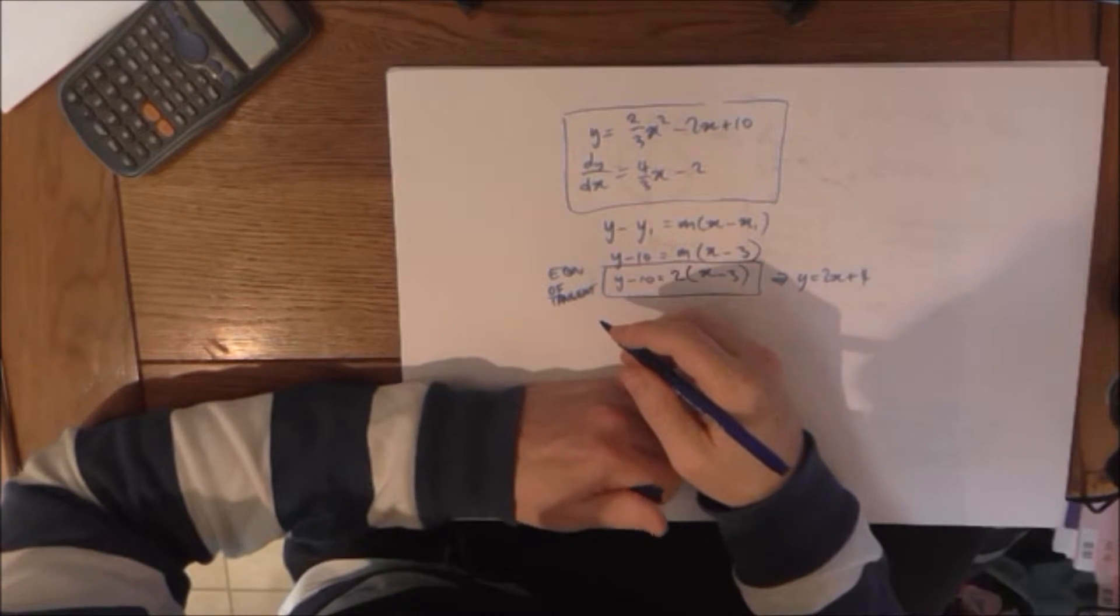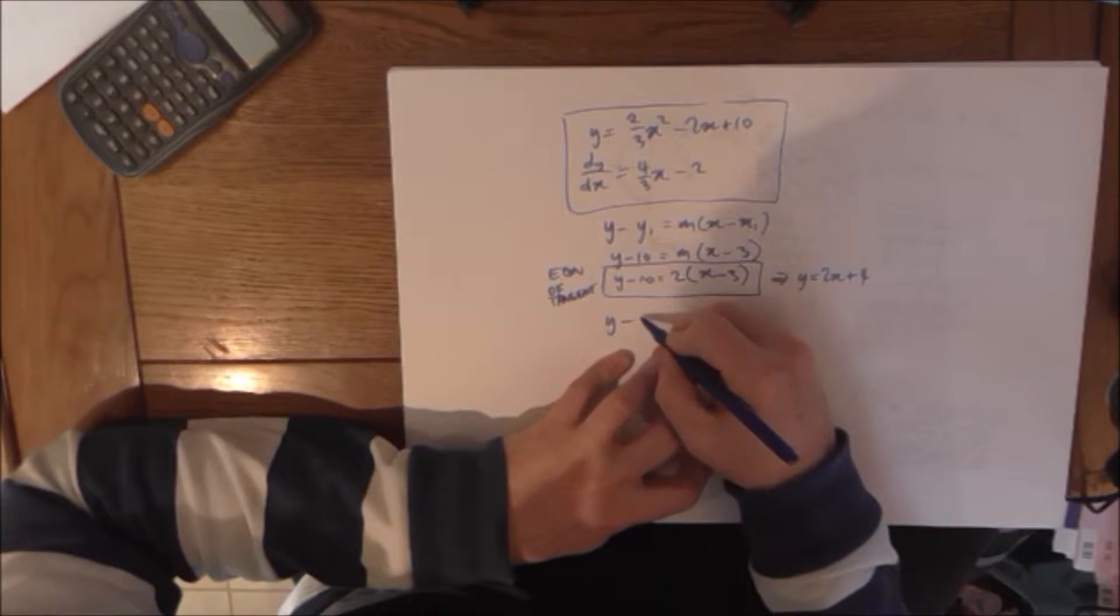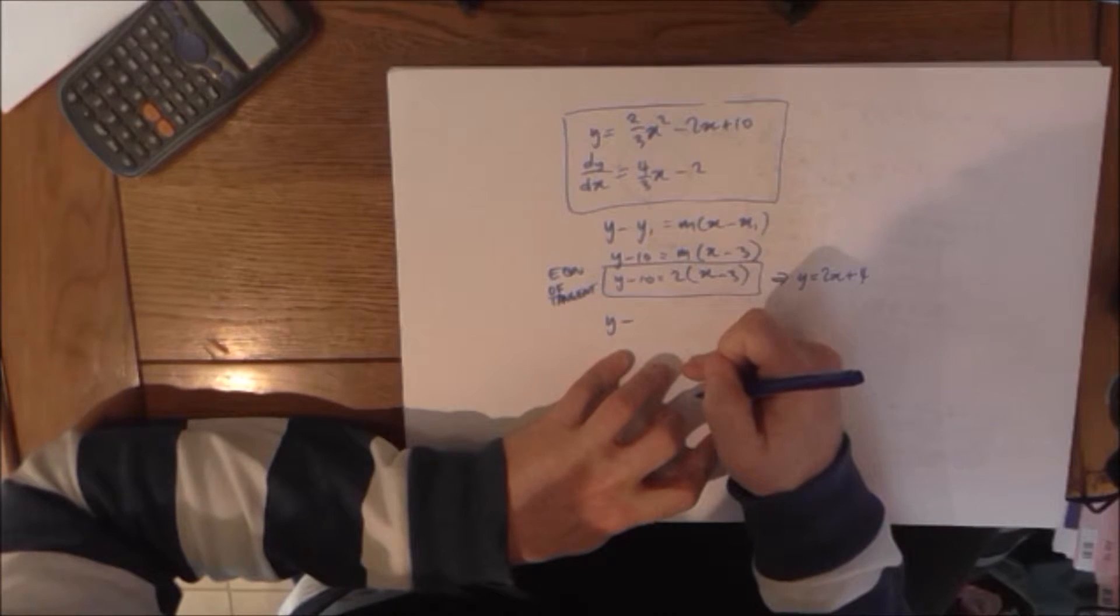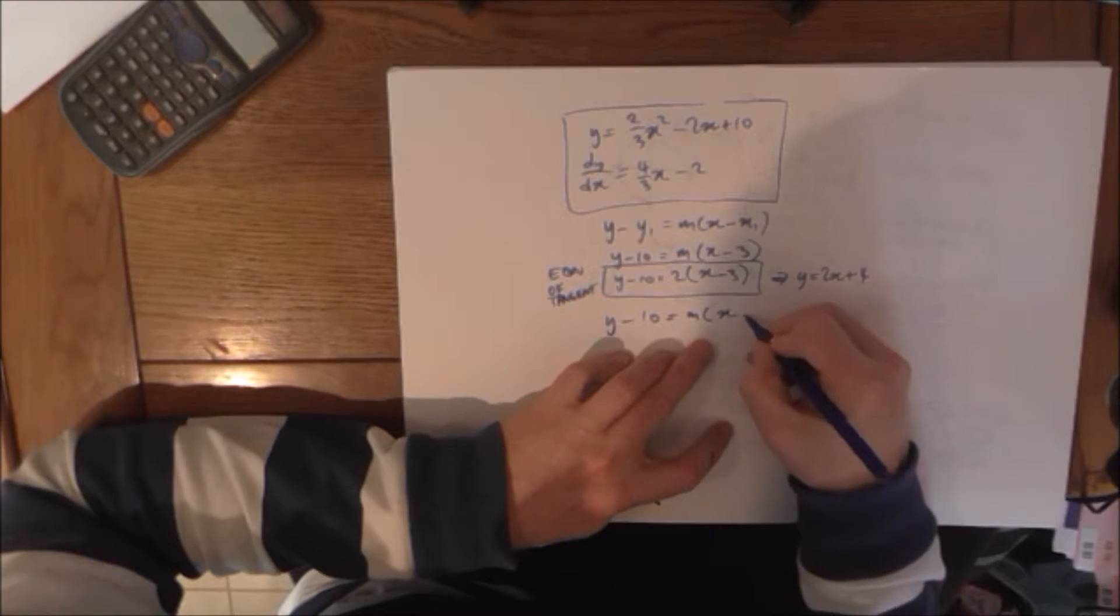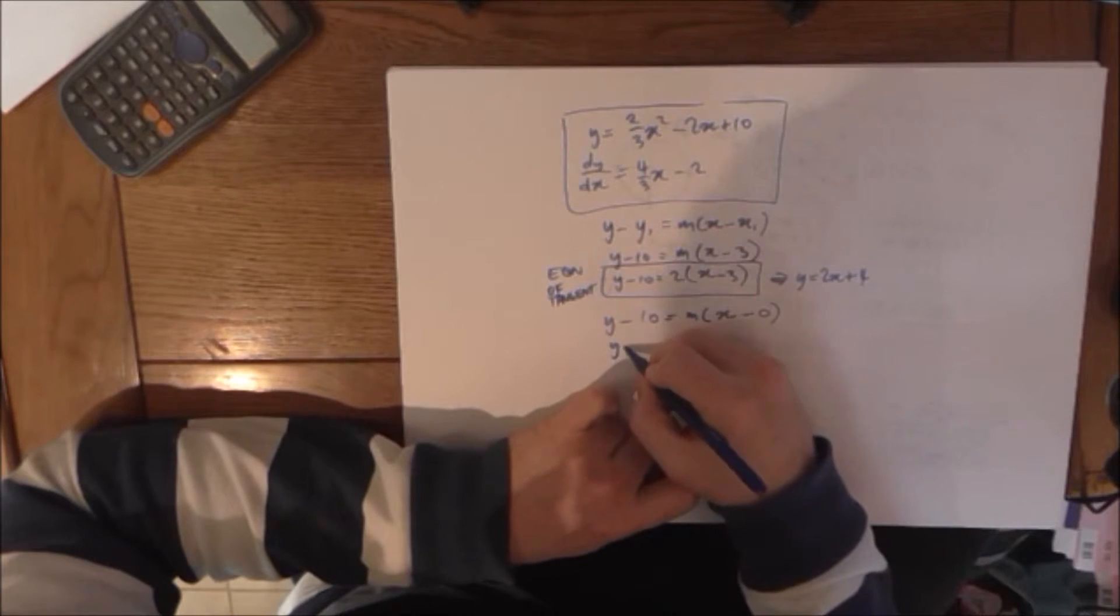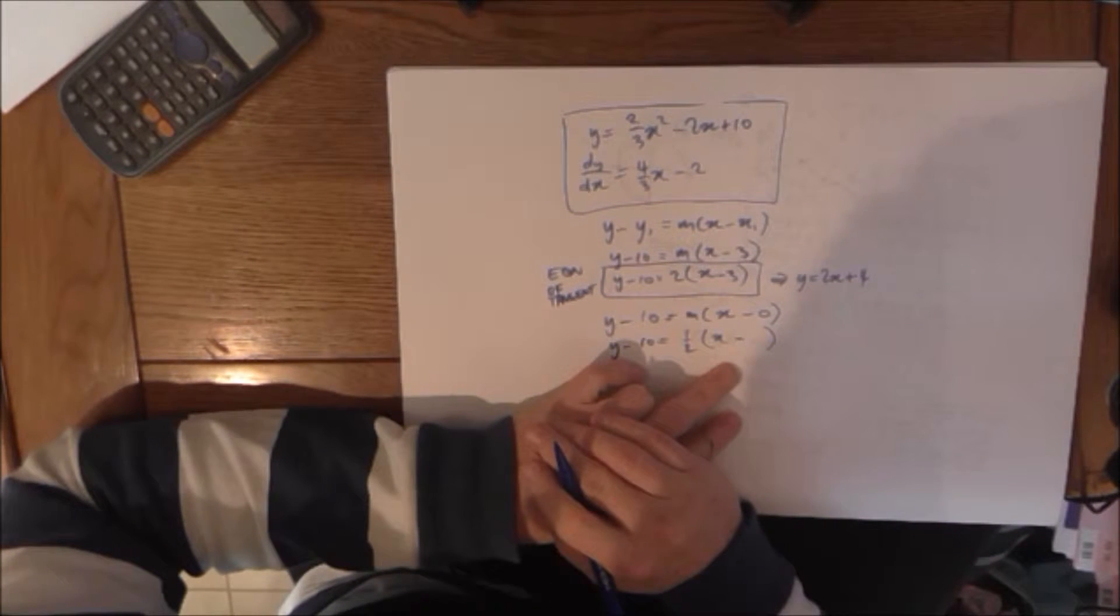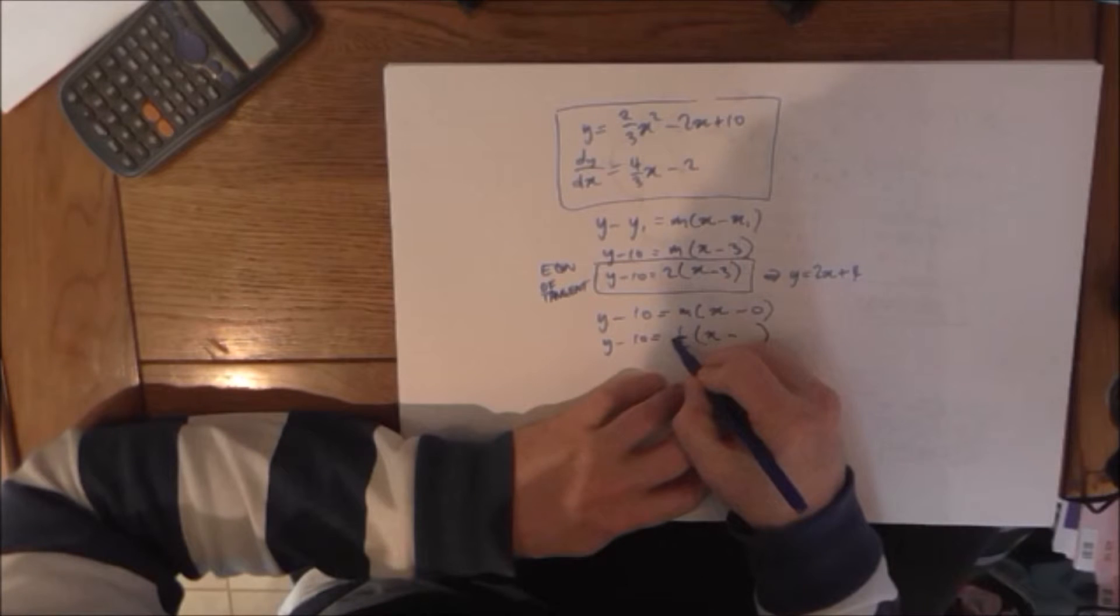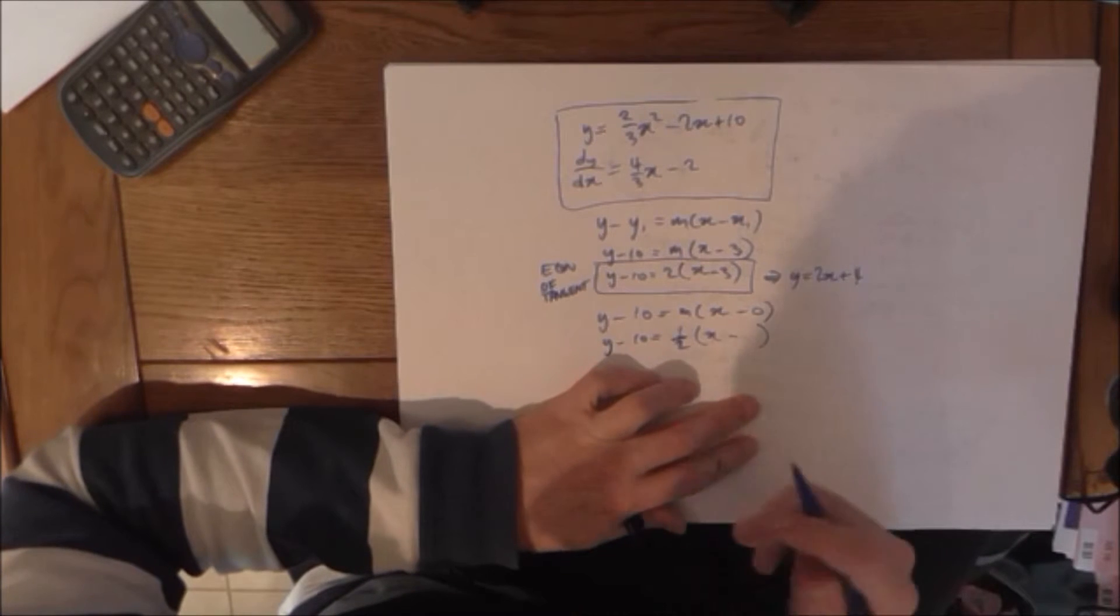Now, the equation of the normal, that's 0, 10. We'll use the same template again. Here's 0, 10. Now, what's my gradient? Put a 0 in there, you get negative 2. We don't want negative 2, we want a half because it's a normal. I'm using whatever gradient it takes to produce a product of negative 1 when I multiply it with the gradient of the tangent. In other words, the gradient of the tangent and the gradient of the normal have to have values that are negative reciprocals of each other.